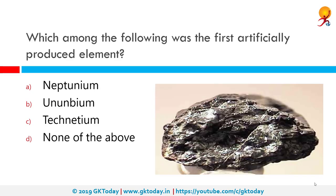Which among the following was the first artificially produced element? The correct answer is technetium. Technetium is a chemical element with the symbol Tc and atomic number 43. It is the lightest element whose isotopes are all radioactive — none of them are stable, excluding the fully ionized state of Tc-97.